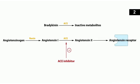ARBs don't cause a cough because they don't inhibit angiotensin converting enzyme. So bradykinin levels remain normal, and angiotensin II levels remain normal as well. ARBs block the angiotensin receptors. So that's it for the warm-up.